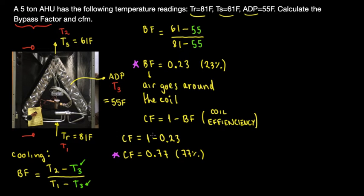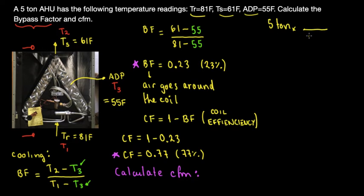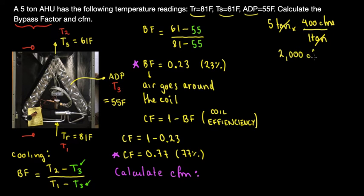Now we're going to calculate the CFM. For a five-ton unit, the rule of thumb is 400 CFM per ton — though depending on location it can range from 350 to 450 CFM. Using 400 CFM per ton, a five-ton unit delivers 2000 CFM total.